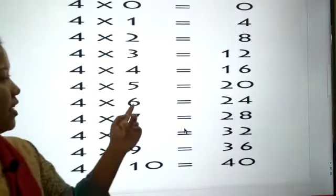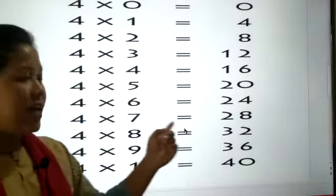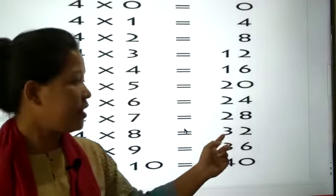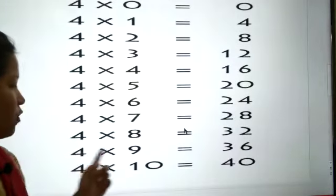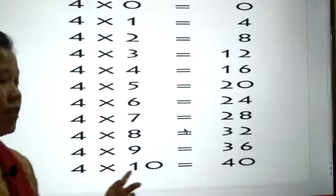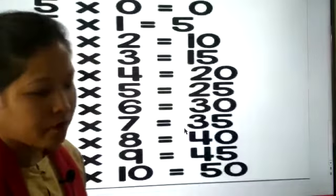4 6s are 24, 4 7s are 28, 4 8s are 32, 4 9s are 36, and 4 10s are 40. Now table of 5.